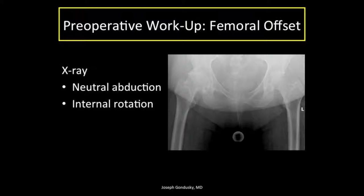Offset is really recreated by appropriate preoperative templating and intraoperative trialing. The preoperative x-ray should place the femurs in symmetric neutral abduction and the limb should be internally rotated to view the femurs in profile. This internal rotation compensates for the natural femoral anteversion which places the neck out of the plane of the shaft. Preoperative templating of the contralateral hip is often required because in severe hip OA, obligate fixed hip external rotation is common.